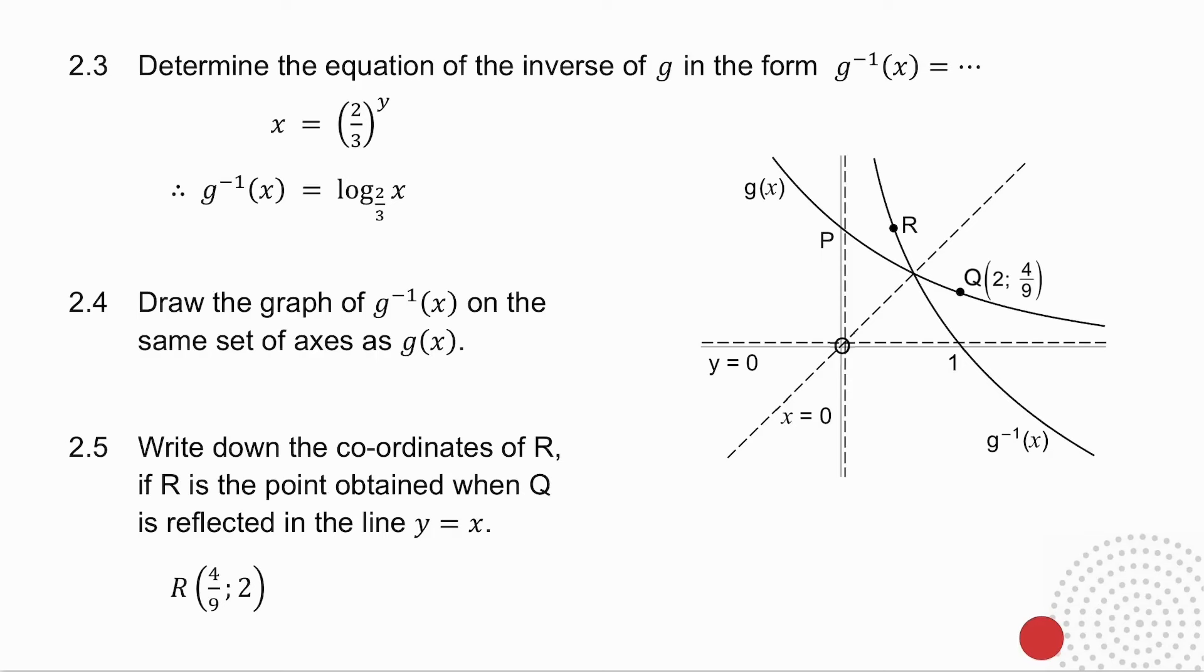2.3 asks you for g to the minus 1 of x. Remember, in place of y goes x, and in place of x goes y. And I change to logarithmic form, and I get g to the minus 1 of x.